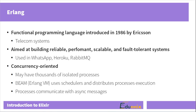Erlang is a mature functional programming language that was initially introduced in 1986 by a company called Ericsson. That's a Swedish company that works with telecom systems, and the language itself was named after a mathematician called Agner Erlang. But of course you can see that the name Erlang also simply means Ericsson language — it's like an acronym for those two words.